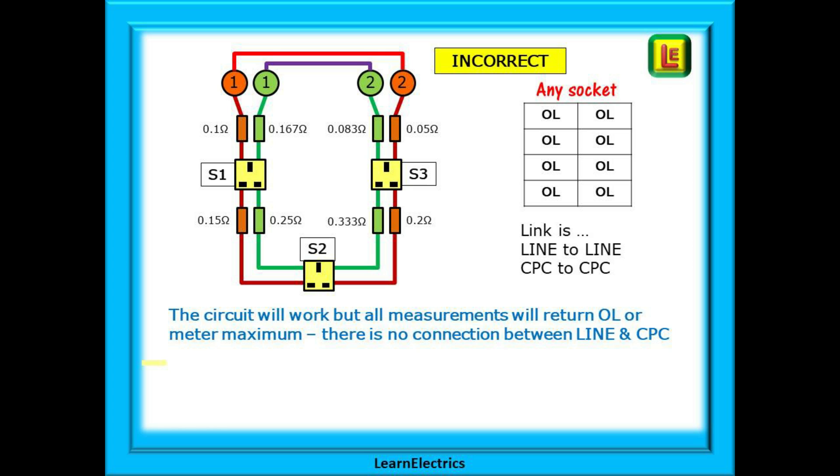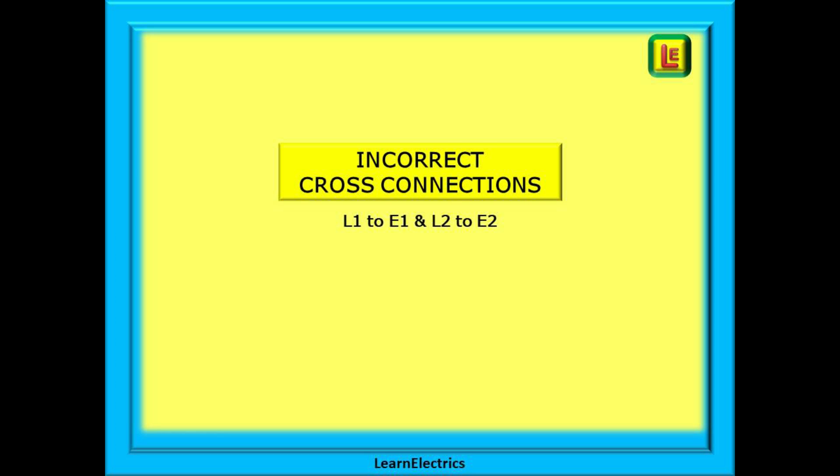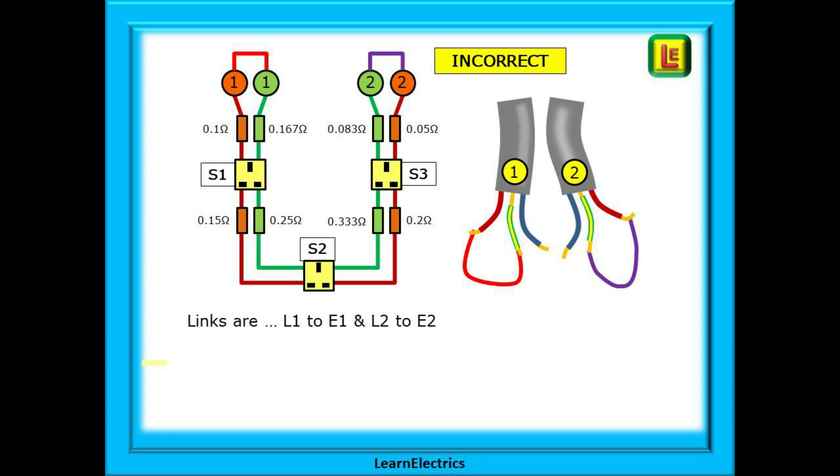The way that we have connected the links has made two completely independent circuits. This is only a problem when trying to test. When put back into service and energised, the circuit will work normally, boil the kettle, make you a cup of tea etc. The most common type of cross connection error is this next one. Line and earth are connected on the same cable end. L1 is connected to E1 and L2 is connected to E2. As you can see here, the lines are not connected to the opposite earths. They are not cross connected. We have just connected the ends of the same cable.